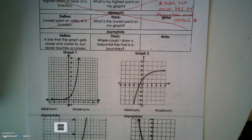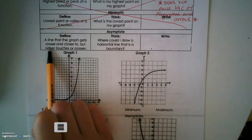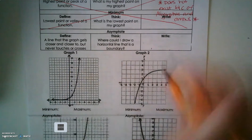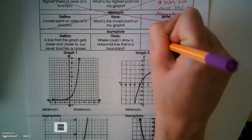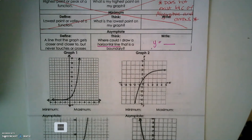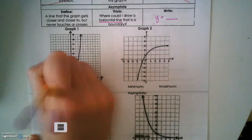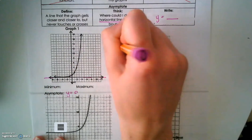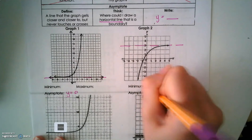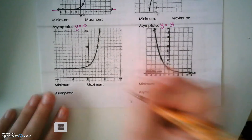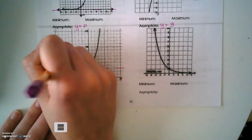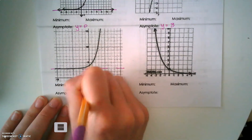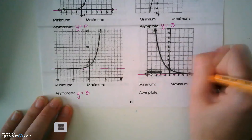But we can talk about your asymptote. Remember, your asymptote is a line that the graph gets closer and closer to, but it will never touch. We write it as y equals because that's the equation of a horizontal line. So looking at the first graph, it has an asymptote at y equals 0. The next one has an asymptote at y equals 3. The third has an asymptote at y equals 3. And the last one has an asymptote of y equals 0.